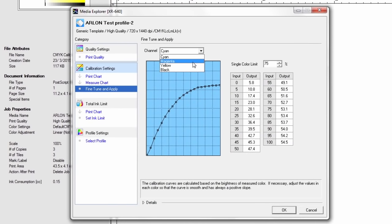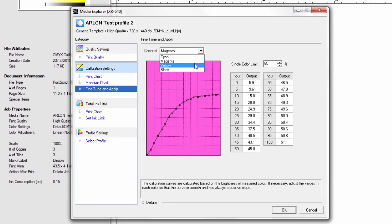You should have smooth curves on each color. If necessary, fine-tune to smooth out any spikes.